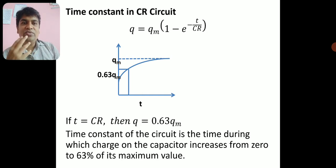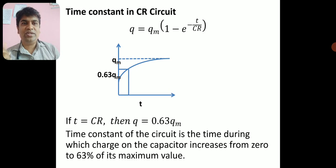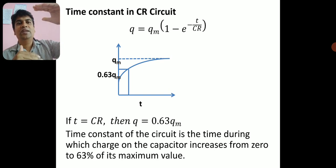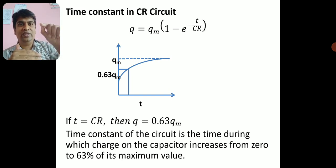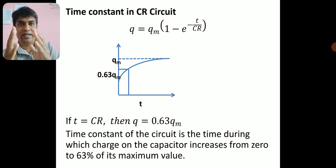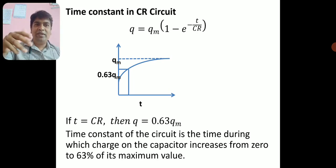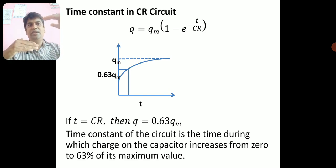The time constant, represented by tau (τ), is defined as the time during which the charge on the capacitor increases from 0 to 63% of its maximum value. For example, if the maximum value is 2 amperes, calculate 63% of that, draw a horizontal line at that value, and the corresponding time on the graph is the time constant of the CR circuit. That time equals C × R.